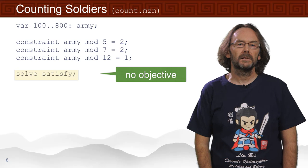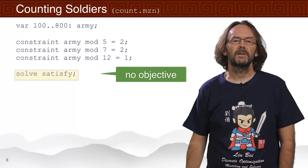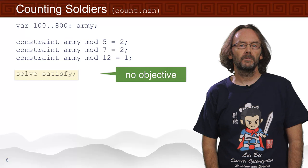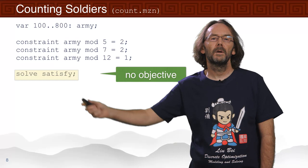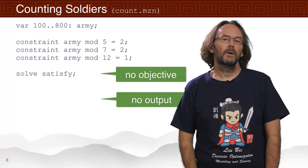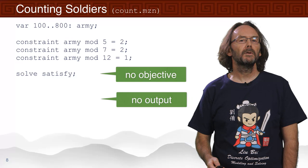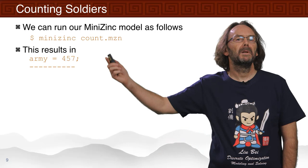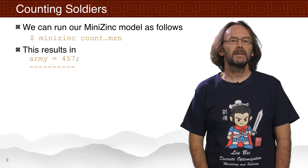Is there a solution to this problem? This is a different kind of problem — it's not a discrete optimization problem, it's a discrete satisfaction problem. We're just trying to find a solution to these constraints with this decision variable. There's no output in this model either. We can run our MiniZinc model by typing MiniZinc count.mzn, and we get this result: the army is 457.